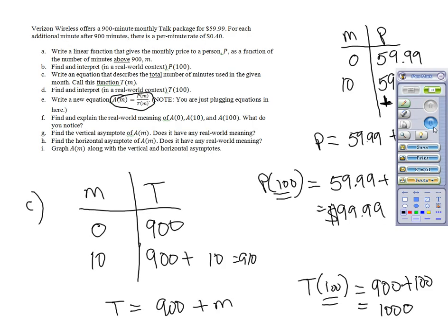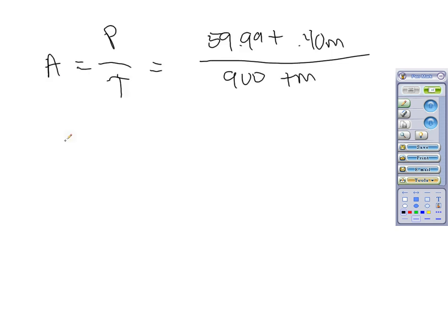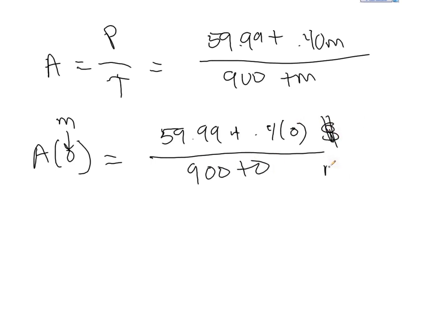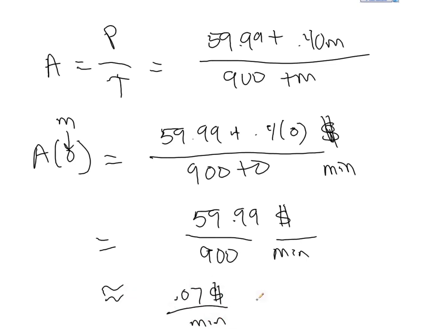Now the question is, find and explain the real world meaning of A of 0, A of 10, A of 100. What do we get when we plug in 0 for M? We're going to get 59.99 plus 0.4 times 0, divided by 900 plus 0. Notice this is the total price, this is dollars, and this is the number of minutes that you've used in total. So in this case, we'll have 59.99 divided by 900, so this is dollars over minutes. So our units are going to be dollars per minute. This comes out to about 0.07 dollars per minute. So this is 7 cents per minute on average.